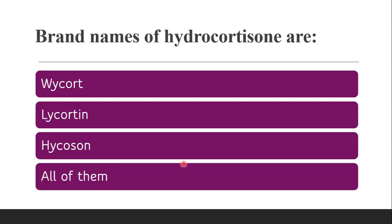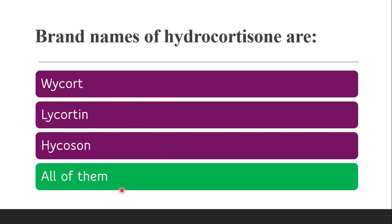Next question: brand names of hydrocortisone are — whether it is Wycot, Lycortin, Hycosone, or all of them. The correct answer is all of them. Hydrocortisone has many brands, but a few are Wycot, Lycortin, and Hycosone.